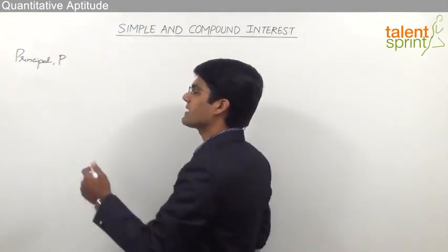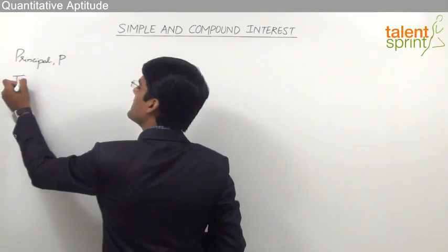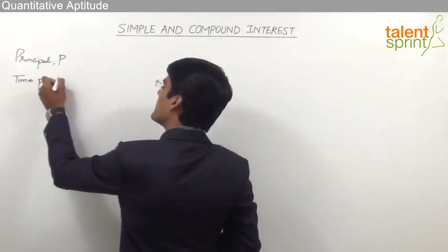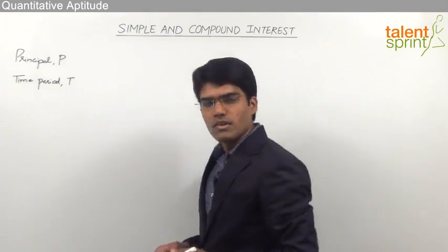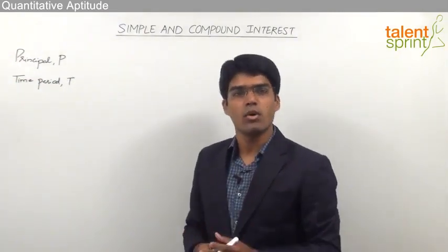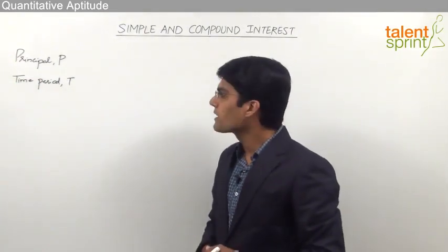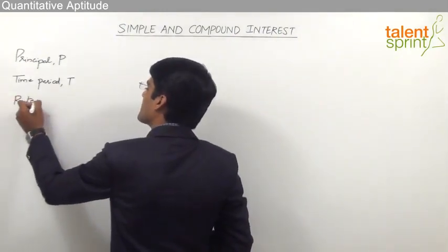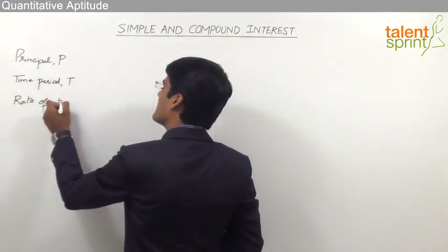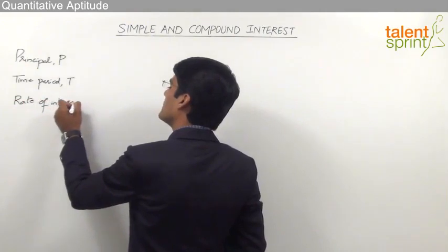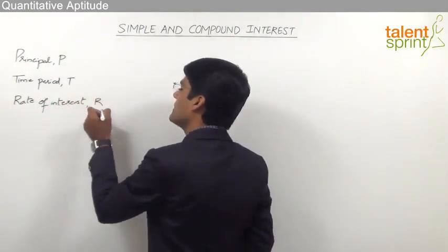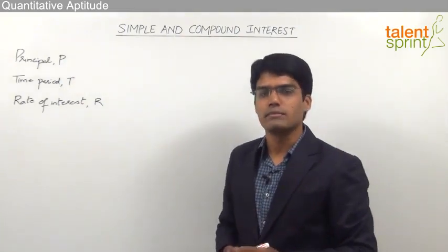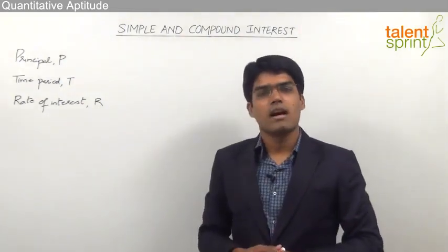The second term is time period, denoted as capital T. This is the time for which the amount has been borrowed or lent. The last term is rate of interest, which is nothing but the rate at which the amount has been borrowed. It is generally expressed as a percentage per annum and is denoted as capital R.